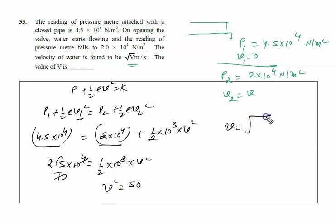So V is given to us as √50. We compare with √V m/s, so V is given by 50. The right answer to this problem is 50.